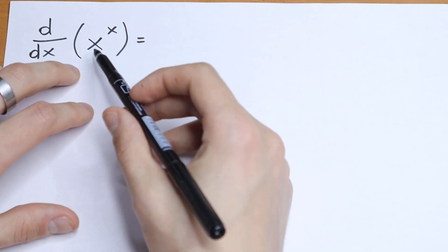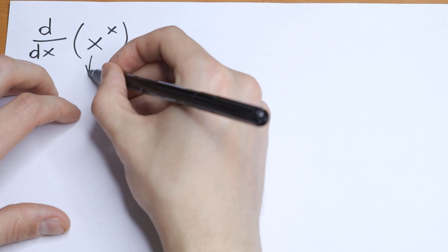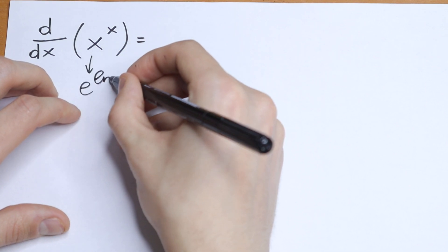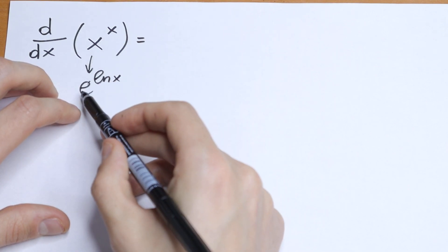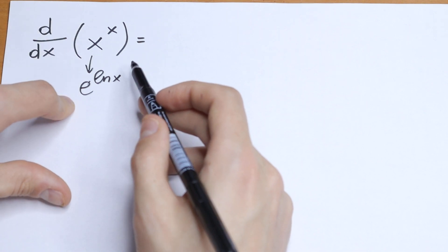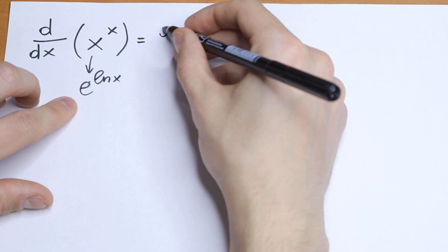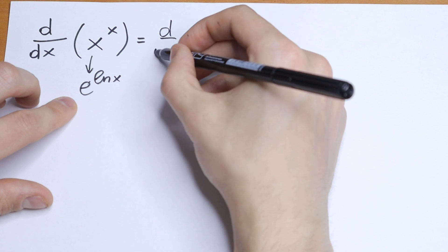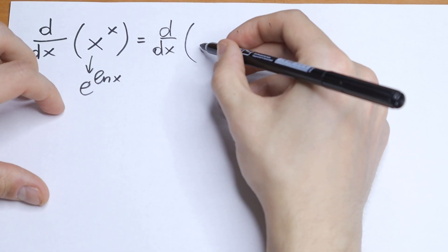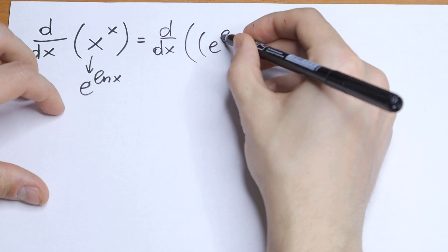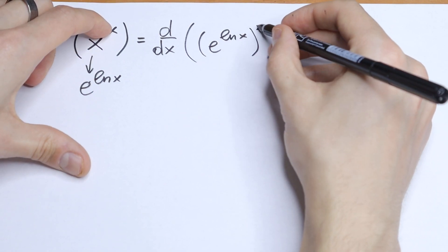I want to suggest writing x as e to the power natural log x. This will of course be the same value, but we rewrite x as e to the power natural log x. So we will have d/dx of e to the power natural log x, raised to the power x.